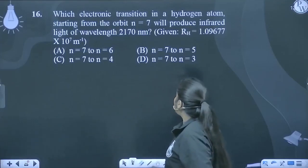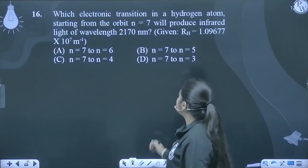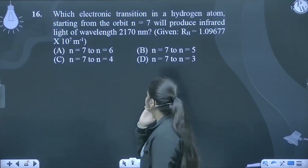Which electronic transition in a hydrogen atom starting from the orbit n equals 7 will produce infrared light of wavelength 2170 nanometer?